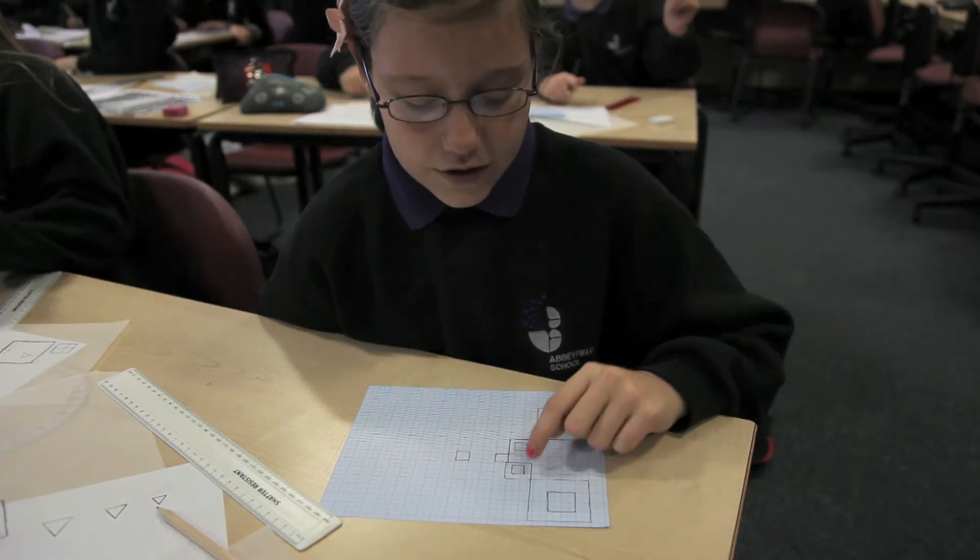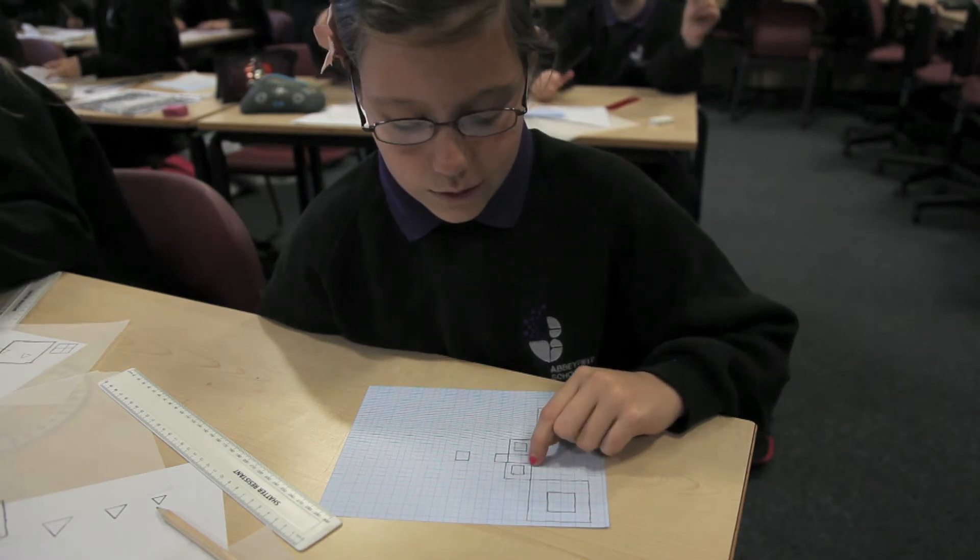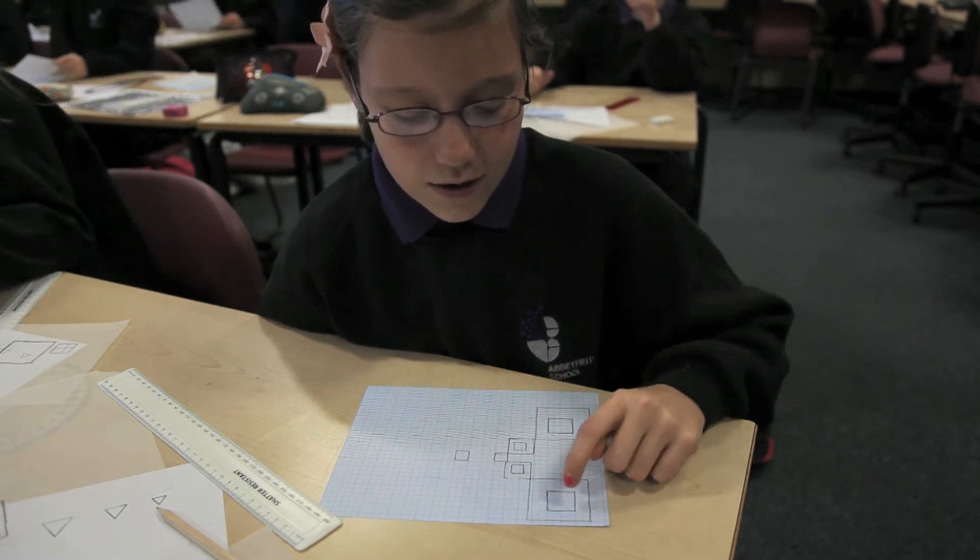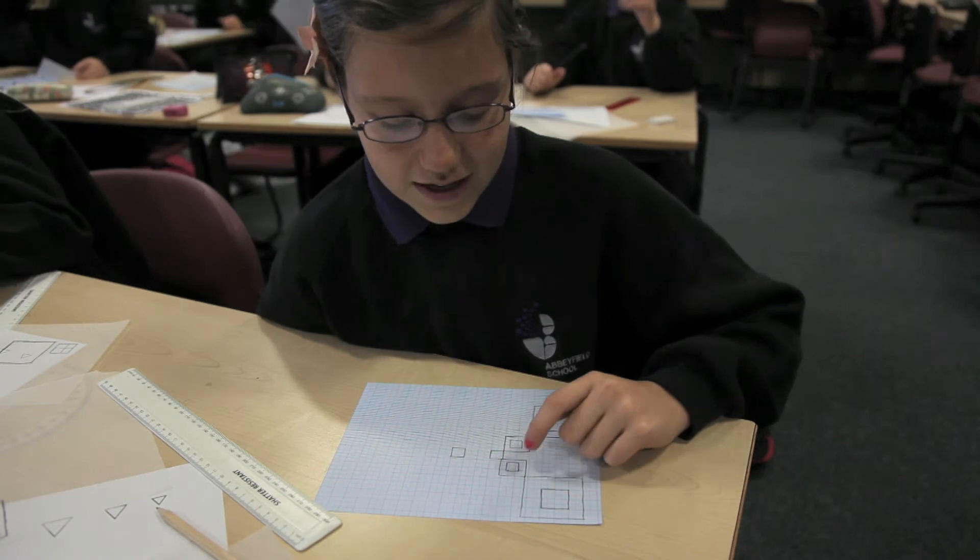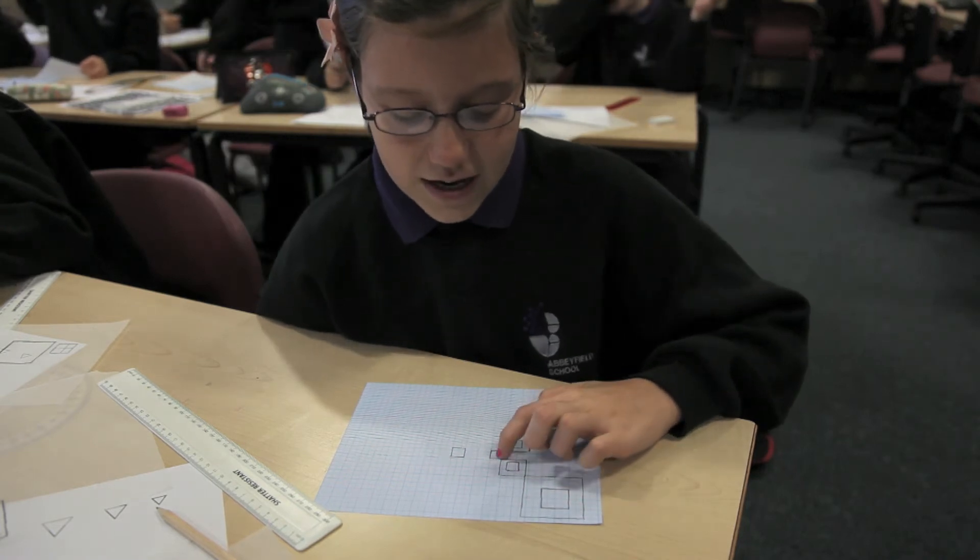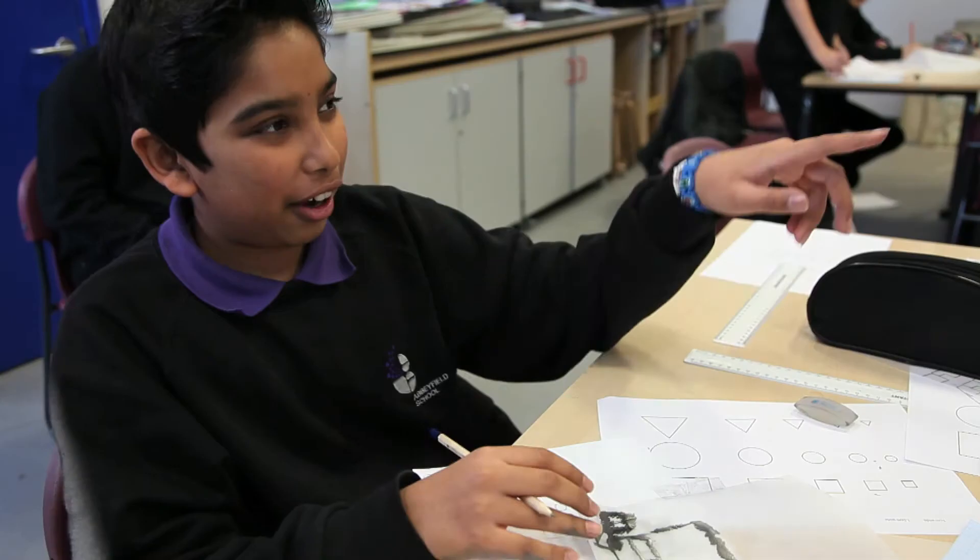I was halving the squares, so that was four centimeters and that was two and that was one. Then I wanted to put a two centimeter one in the four and a one centimeter in the two centimeter square, and then just end up with a one centimeter square.